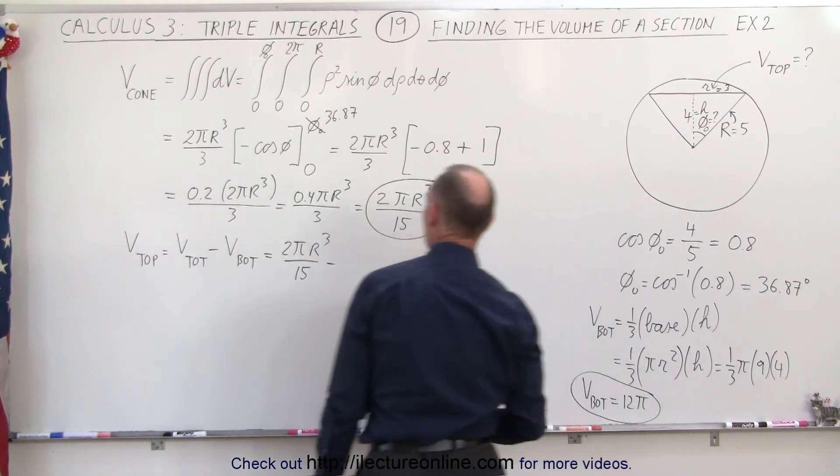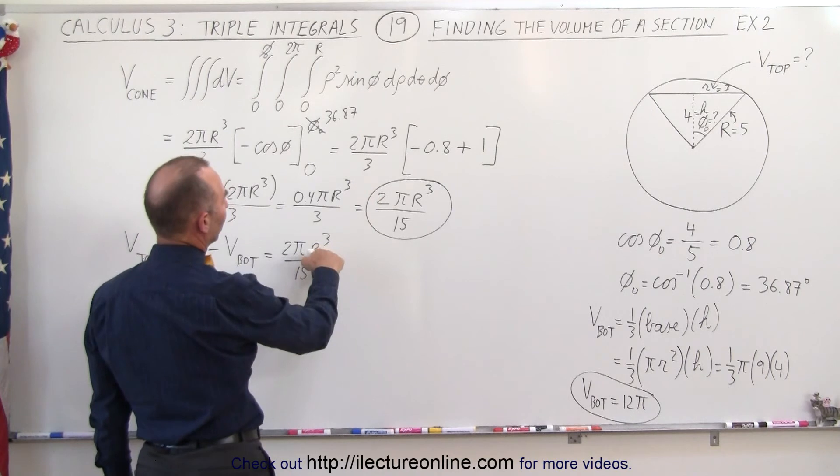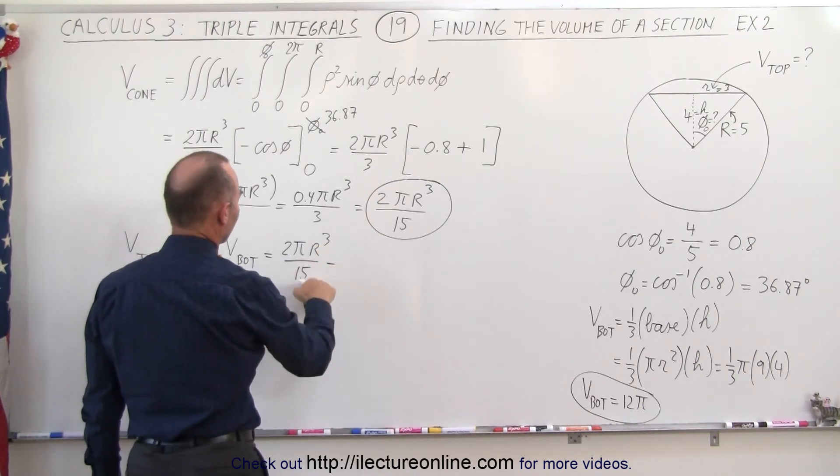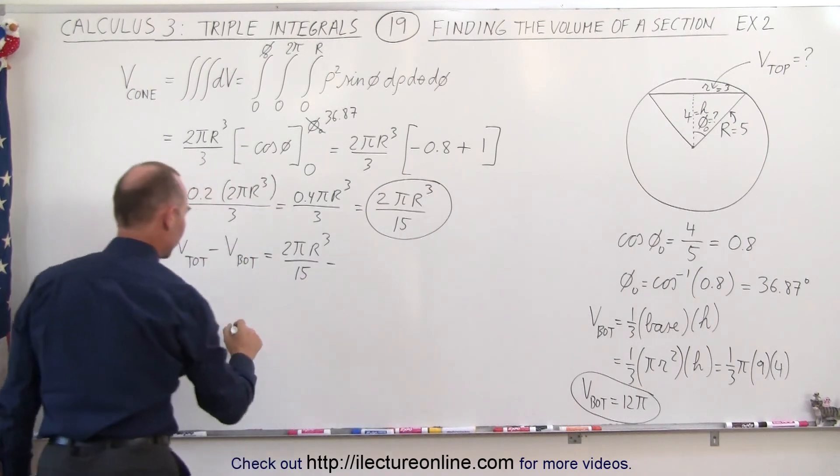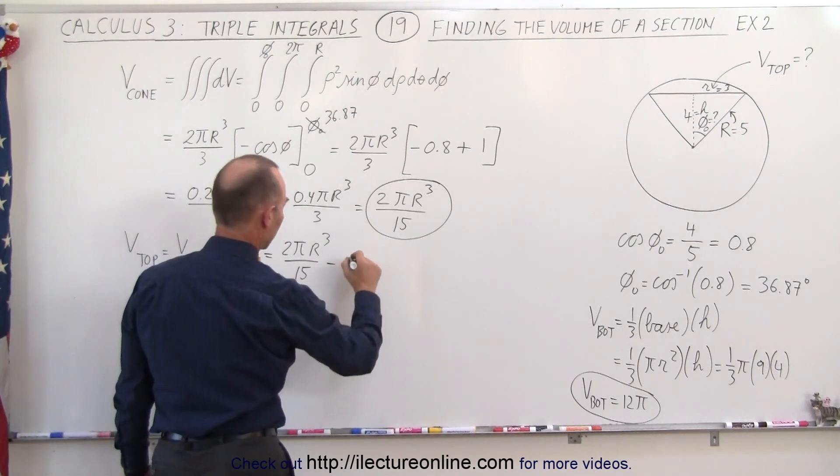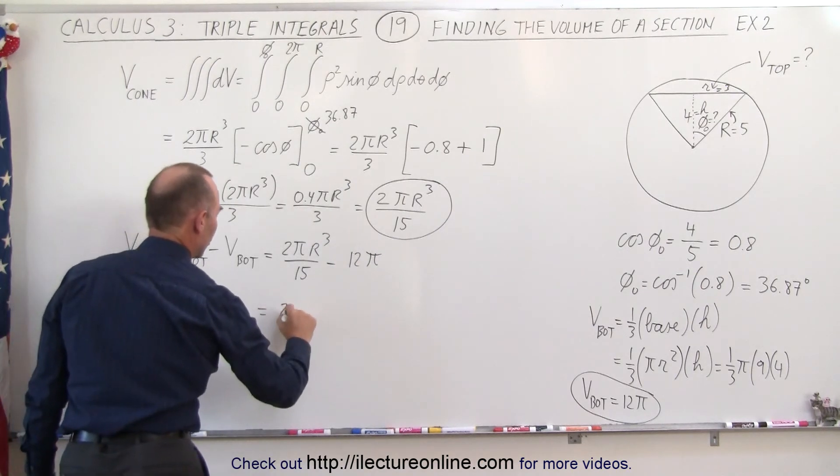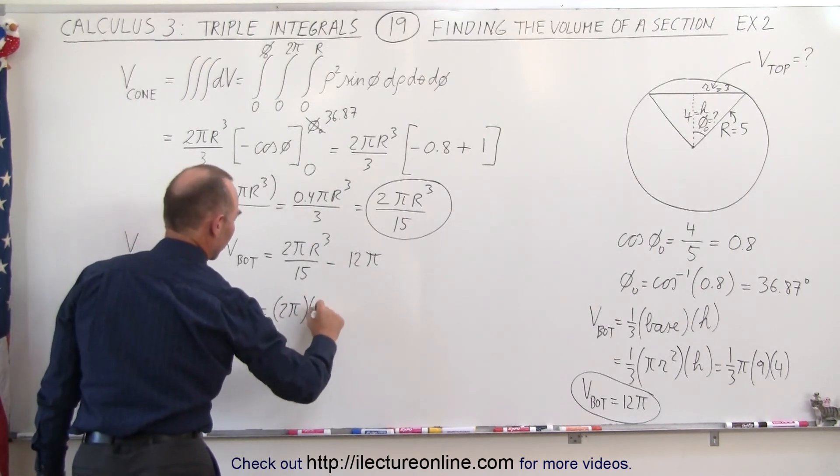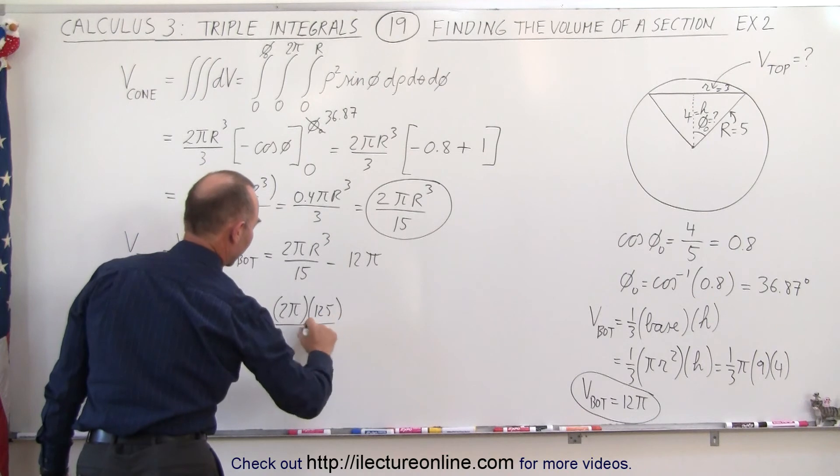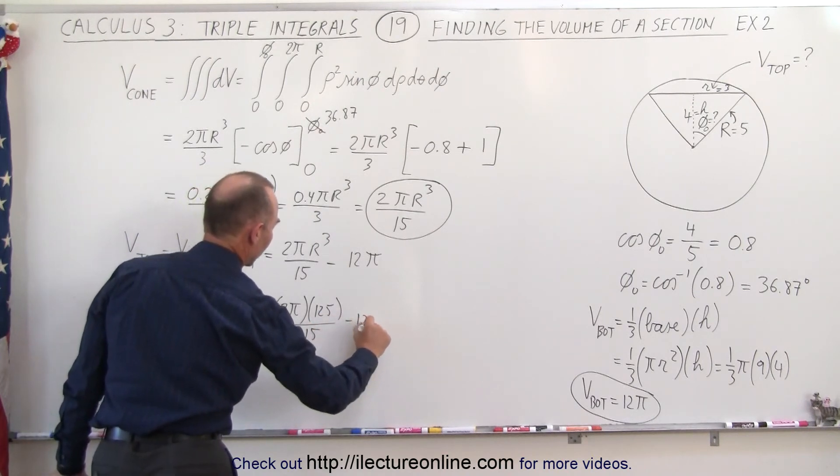Now let's calculate this volume, since we know what r is equal to. r is equal to 125, 125 divided by 15. So this is equal to 2π times 125 divided by 15 minus 12π.